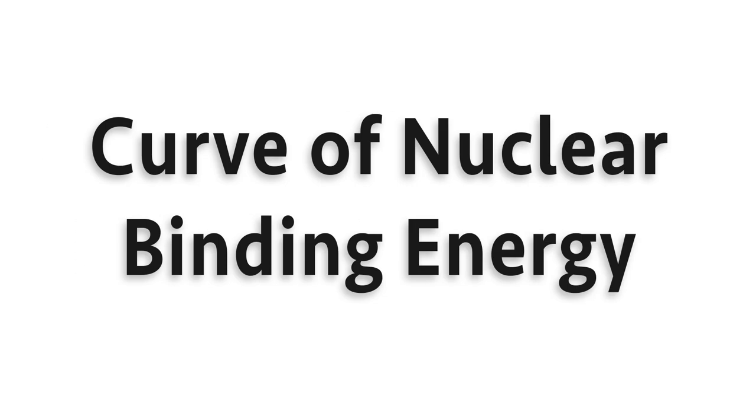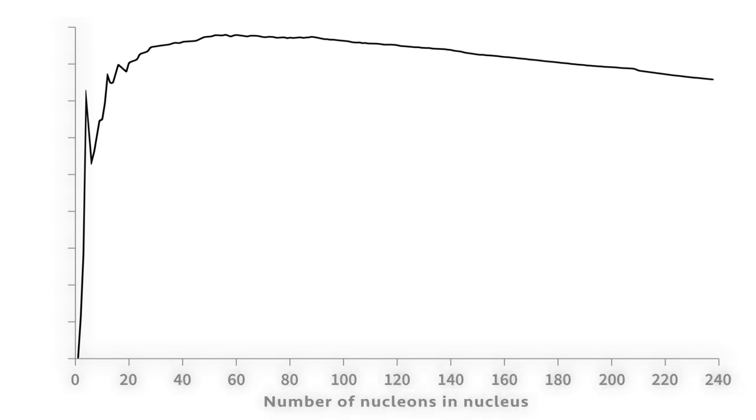The binding energy for different nuclei is not the same. That is shown in a very important curve called the curve of nuclear binding energy. On the bottom is the total number of nuclear particles, also referred to as nucleons, in each nucleus. On the left side is the average binding energy per each nucleon in units of MeV, or million electron volts. The MeV represents the amount of energy needed to break up the nucleus and free each particle from the binding grip of the strong nuclear force.